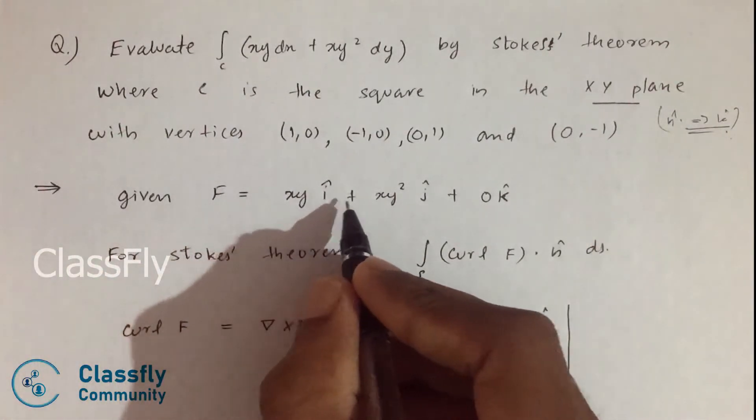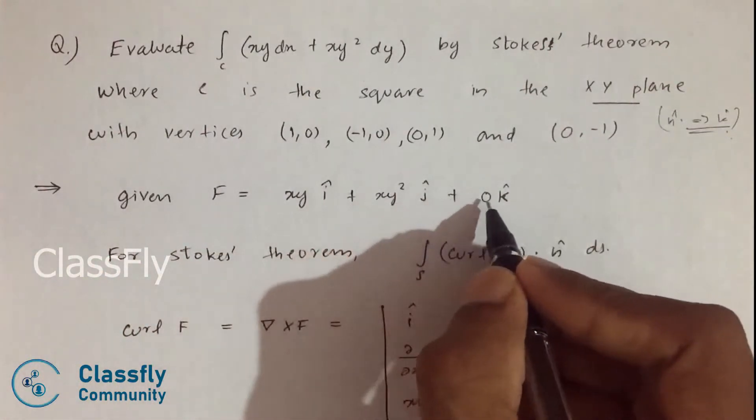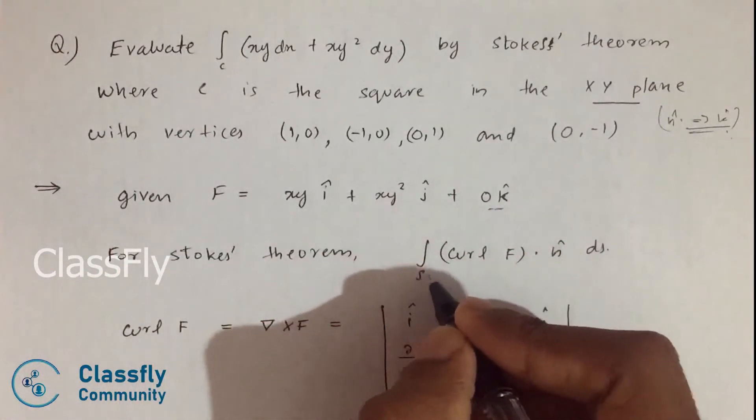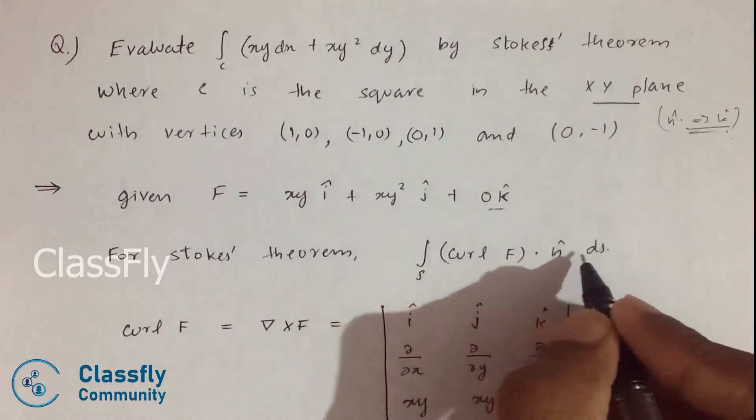Given F equals xy i cap plus xy squared j cap plus 0 k cap. For Stokes' Theorem, we integrate over the surface curl F dot n ds.